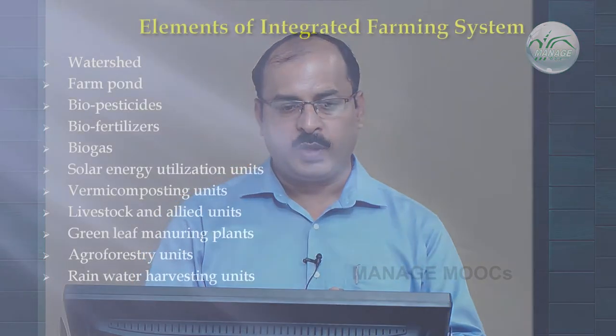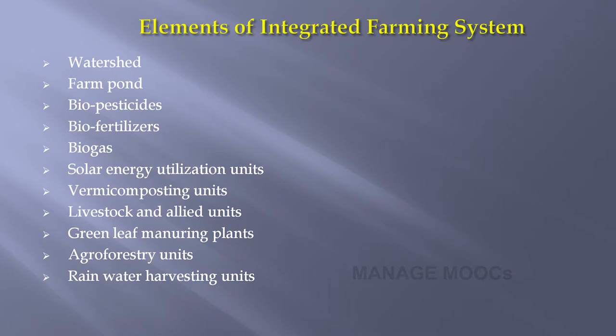Now what are the different elements of integrated farming system? These include watershed, farm pond, biopesticides, biofertilizer, biogas, solar energy utilization unit, vermicomposting unit, livestock and allied units, green leaf manuring unit, and agroforestry unit. Moreover, the rainwater harvesting unit is also one of the important elements of integrated farming system.